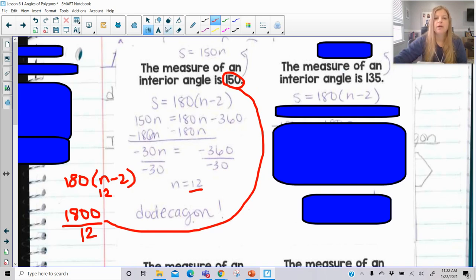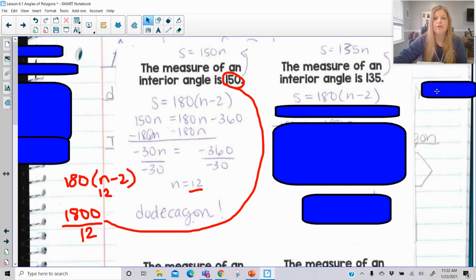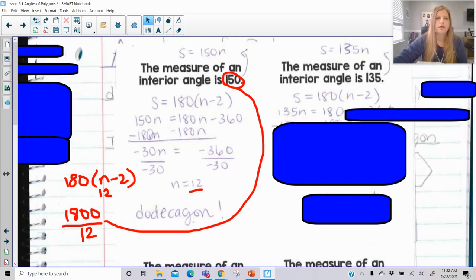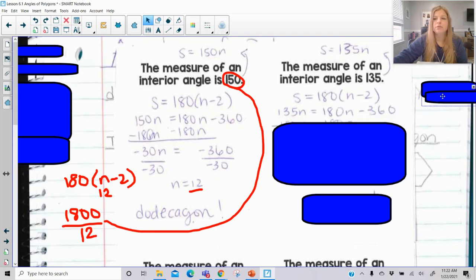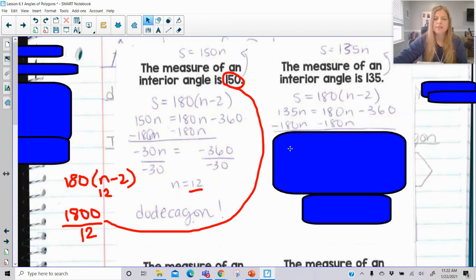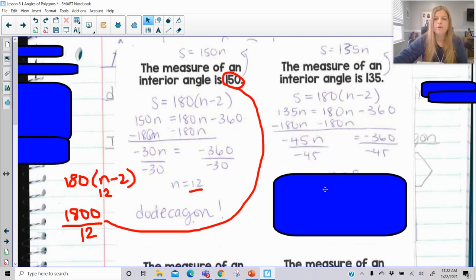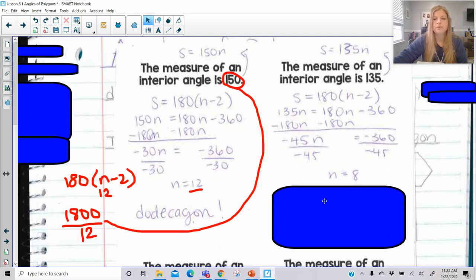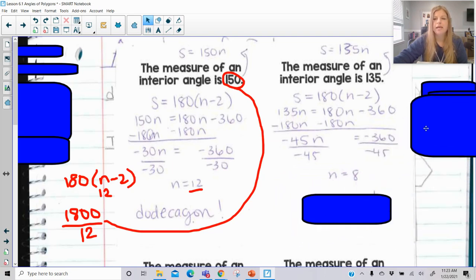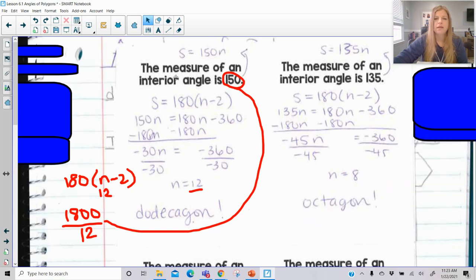Let's look at the next one. The measure of an interior angle is 135. So I'm going to replace the sum of all of the angles with 135n because it's 135 times however many angles there are. We're then going to continue to just solve for n. So same steps as the previous problem. Subtract 180n, then divide by that negative 45. Always make sure you get a positive answer. We end up getting 8 as the result. We know 8 is an octagon.